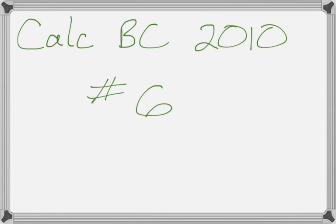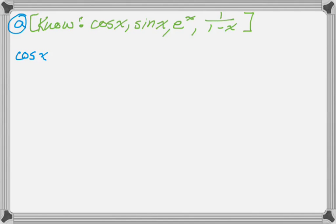Alright, this will be number 6 from the 2010 BC exam, and it's a series question. So the first thing is, we have to just write down some terms of the series for cosine. You need to know cosine, sine, e to the x, and 1 over 1 minus x. Make sure you don't walk in not knowing those. So cosine, we know cosine is an even function, it only has even powers of x in its expansion. And since we have that memorized, we can just jot it down.